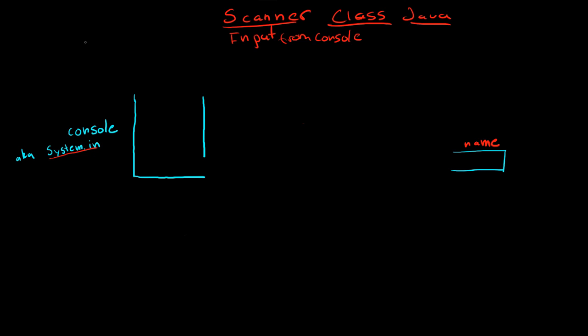So, Java is an object oriented programming, so everything is an object. Here I've written two objects. This is a variable, and it's a type string. String is an object in Java. And then your console can also be thought of as an object. It's also known as system.in in Java.